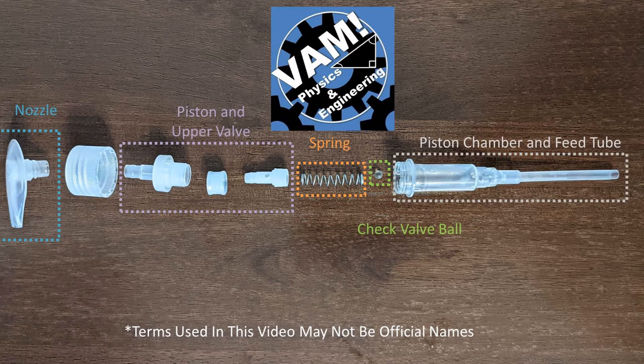From left to right we have a nozzle, a piston, and an upper valve assembly, a spring, a check valve, and a piston chamber and feed tube.